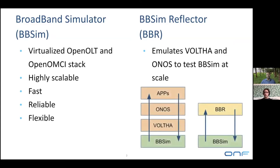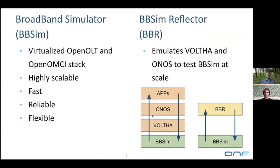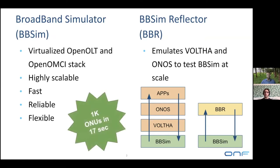To go into more detail: anytime BBSIM sends a message out, it goes through all the Volta components, then possibly through ONOS and the apps, and then comes back through all these hops to BBSIM. BBR doesn't have that complexity, so it can respond much faster, simply proving that BBSIM is not the bottleneck of our scale test. We are now at the point where we can provision, push flows, authenticate, and give an IP to 1000 devices in less than 17 seconds.